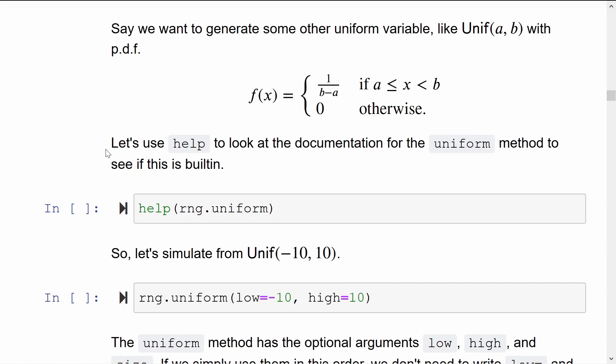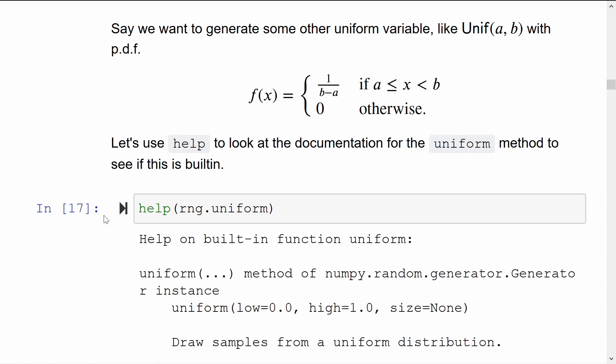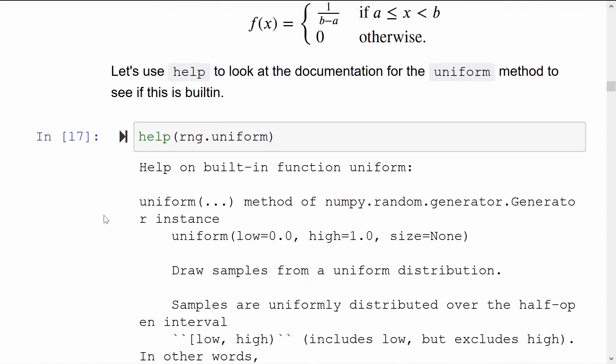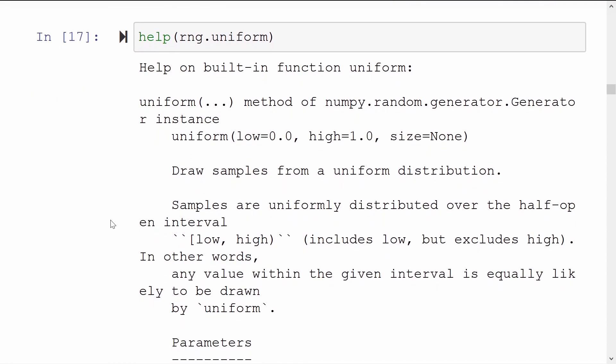To generate a different kind of uniform distribution, one with arbitrary lower and upper limits, what I'll do is use the help function. And if I call help of rng.uniform, it will tell me the kind of arguments that the function expects. And here we can see, we could have guessed this perhaps, that it takes a low argument and a high argument and a size argument, which is how many uniforms you would like to generate in one go.